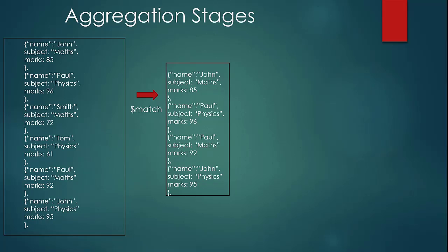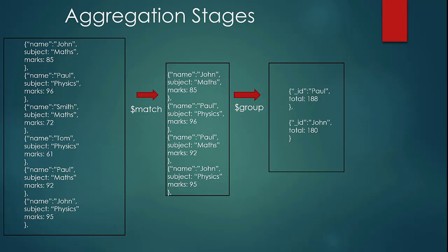When you further send this data from your first stage into the second stage of group, you are creating two fields: underscore id and total. Underscore id is based on the field name, so you see underscore id as name 'Paul' and 'John'. Total is based on accumulation, and you can see this is the final result from the different stages applied in the aggregation.